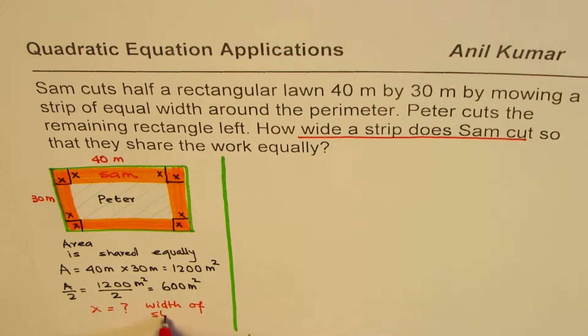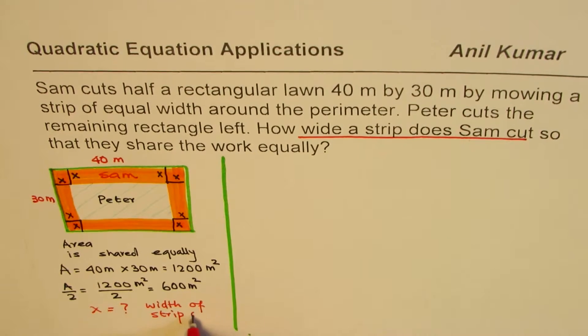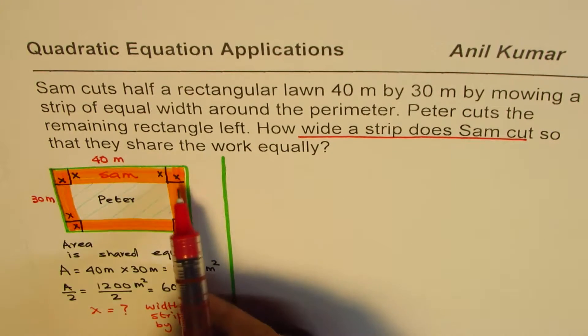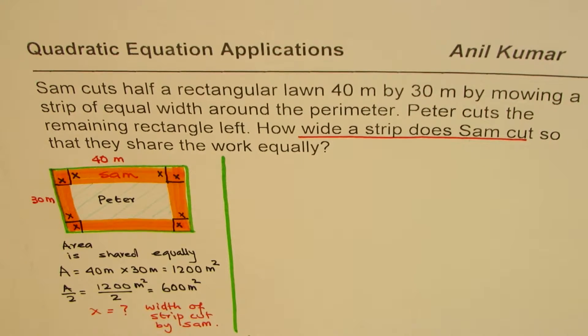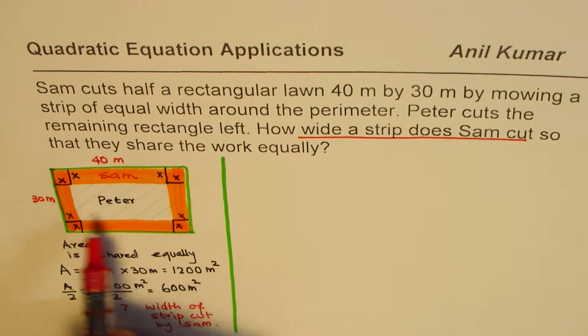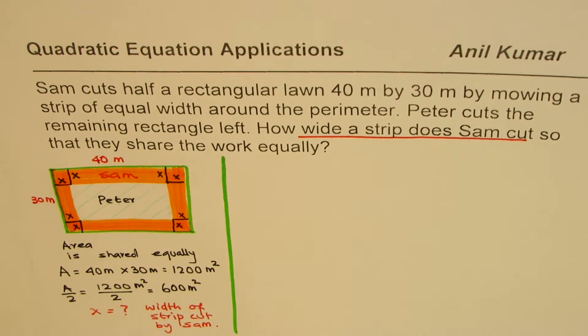So we have defined our variable which is the width of strip cut by Sam. If this is x, then what is the job left for Peter? Well, in that case, inside rectangle, the length will be 2x removed from 40, so it is 40 minus 2x. The width will be 30 minus 2x.